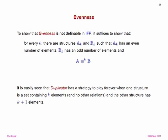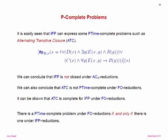To show evenness is not definable in IFP, we show that for every k, we can find a pair of structures — one with an even number of elements and the other with an odd number — that can't be distinguished in the pebble game. This is easy: take A to be a structure with k elements and B with k+1 elements. One of those numbers is even, the other odd. Since there are no relations other than equality, Duplicator just needs to preserve equality, and since there are only k pebbles to place on each side, Spoiler can never demonstrate the difference. That proves evenness is not definable in IFP.